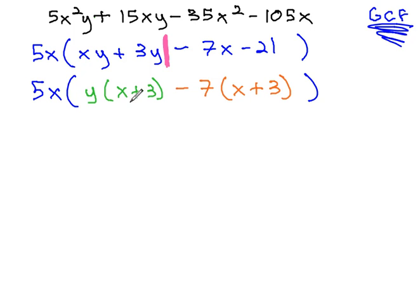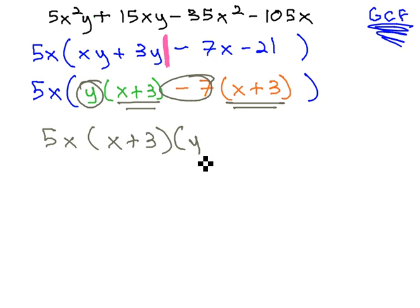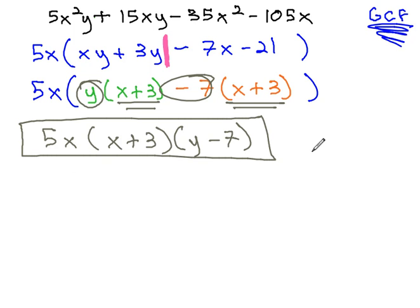Notice, we do have the binomial GCF that we're looking for in this problem. Keep the 5x out front, then the x + 3, and then the remaining stuff, the y - 7, becomes our last factor. And we've reached our solution by factoring by grouping.